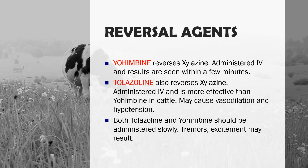For xylazine, our reversal agent is yohimbine — an alpha-2 receptor antagonist that can be used to reverse the effects of xylazine. It is administered IV and results are seen within a few minutes. We also have tolazoline, which also reverses xylazine and is administered IV. Tolazoline is more effective than yohimbine in cattle. Both tolazoline and yohimbine should be administered IV slowly.